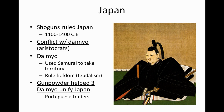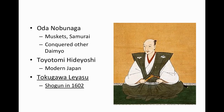The gunpowder brought by Portuguese traders didn't just strengthen the shogun — it allowed three powerful daimyo to centralize and consolidate power among themselves. There were three daimyo who became very powerful: Oda Nobunaga used gunpowder and his samurai to conquer other daimyo; Toyotomi Hideyoshi modernized Japan; and the one to remember is Tokugawa Ieyasu, who became the actual shogun and completely centralized control of Japan by 1602.